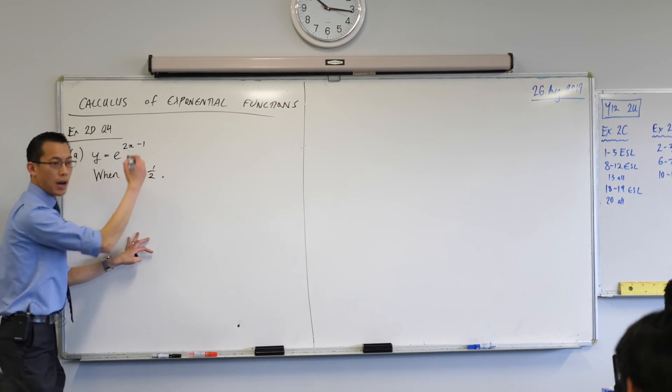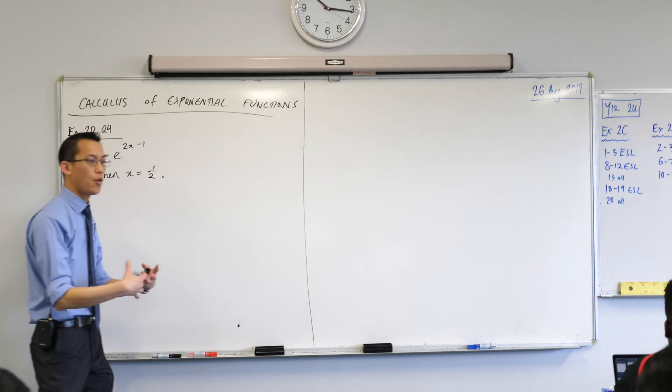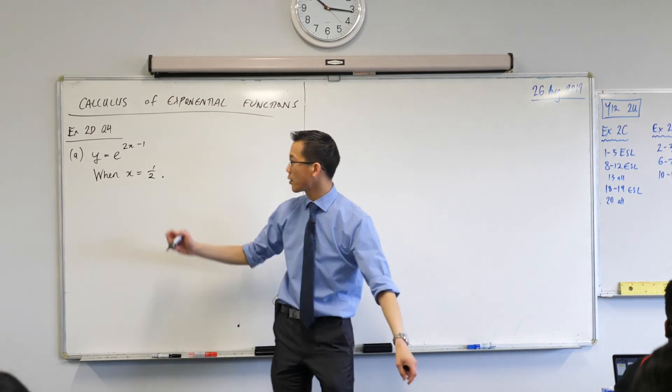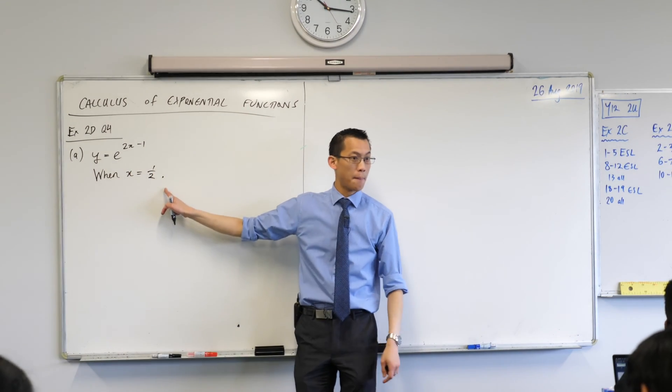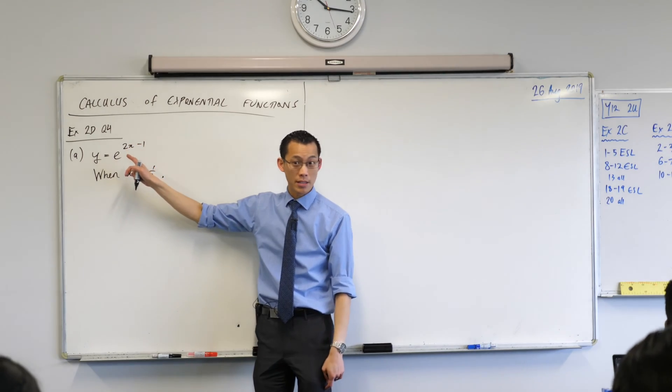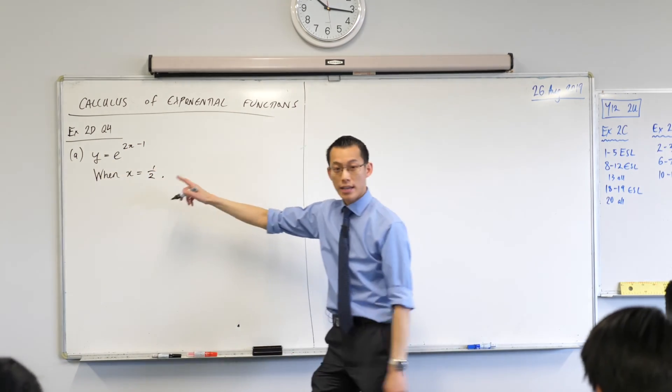And then say when x equals a half. Now what I'm searching for is a y value, so I'm going to substitute this back into the original function. Does that make sense? So let's go ahead and do that. When x equals a half, y equals,